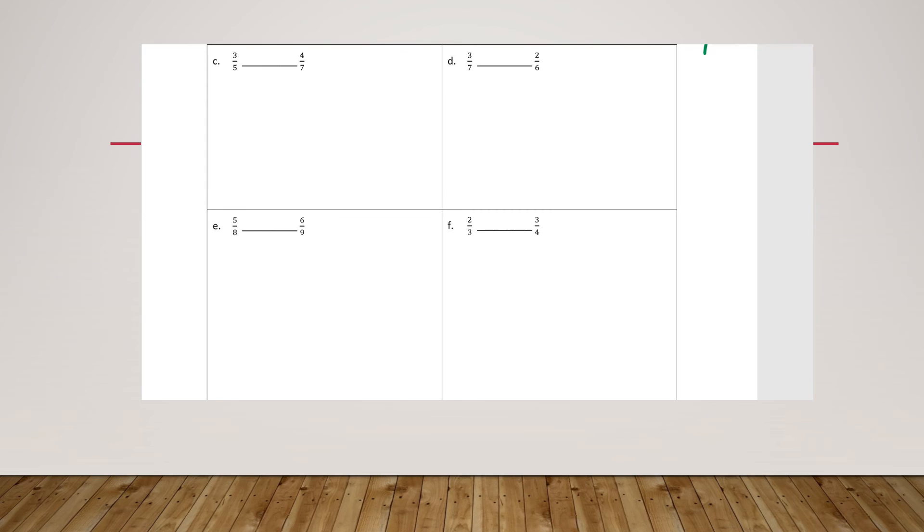So let's do one more problem using just some of the strategies that we've learned. Three fifths compared to four sevenths. In order to find a common denominator, I'm going to multiply five times seven. And I know five times seven is thirty-five.